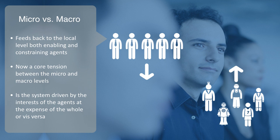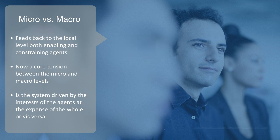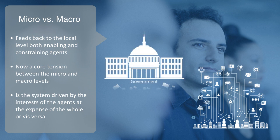If we take an example of an economy, we can have a free market economy which is driven primarily by the interests of the agents in a bottom-up fashion. Or we might have a communist economy driven by a top-down dynamic at the expense of individual motives. Or we may have some economic system that manages to integrate the two.